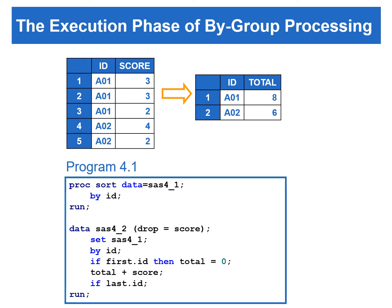Program 4.1 calculates the total scores for each subject. In this program, the variable ID is used as the by-variable; therefore, this data set needs to be sorted first by the ID variable. When the first.id variable equals 1, the variable total is initialized to 0. Then total is accumulated with the value from the score variable by using the sum statement. The subsetting IF statement in the program controls when to output the data — that is when last.id equals 1.